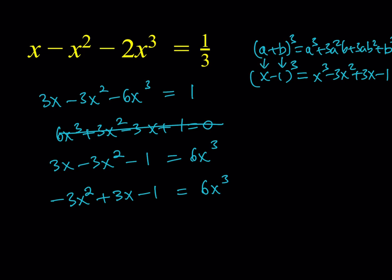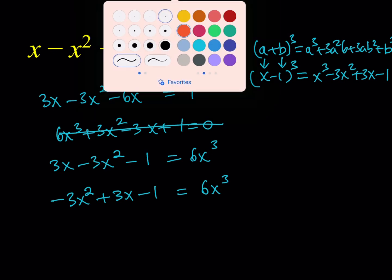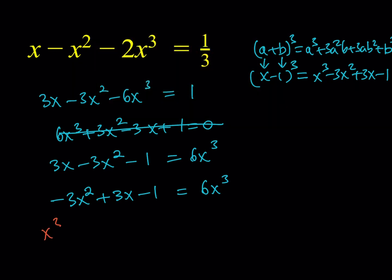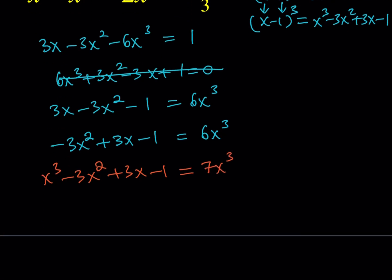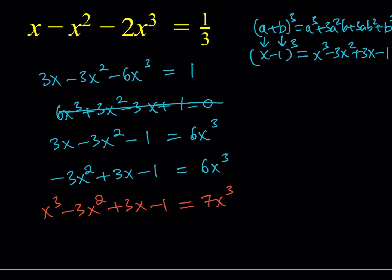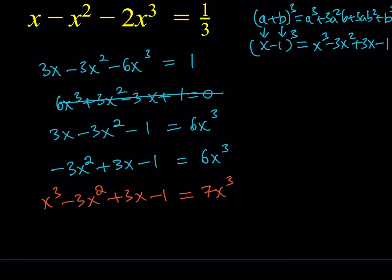Well, what does that equation have to do with this equation? Well, they're related because all you have to do is add x cubed to both sides. And if you do, you're going to get something nice. Look at this. Add x cubed to the left-hand side, and then add the same thing to the right-hand side, which is going to give you 7x cubed. Now, what do you see? You do see a perfect cube on the left-hand side. So that is (x - 1) cubed, which is equal to 7x cubed.